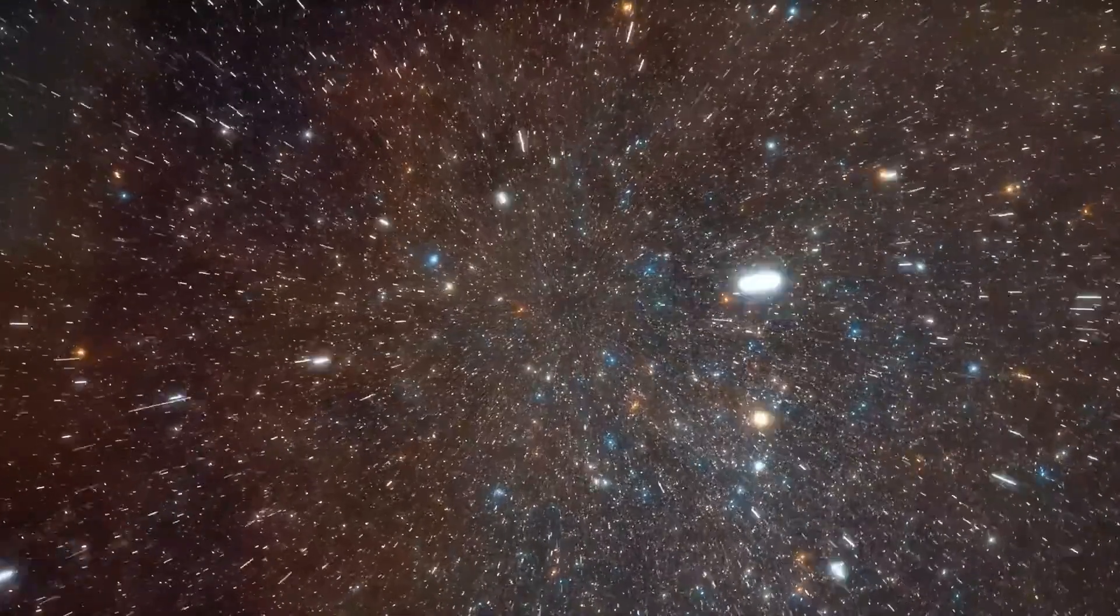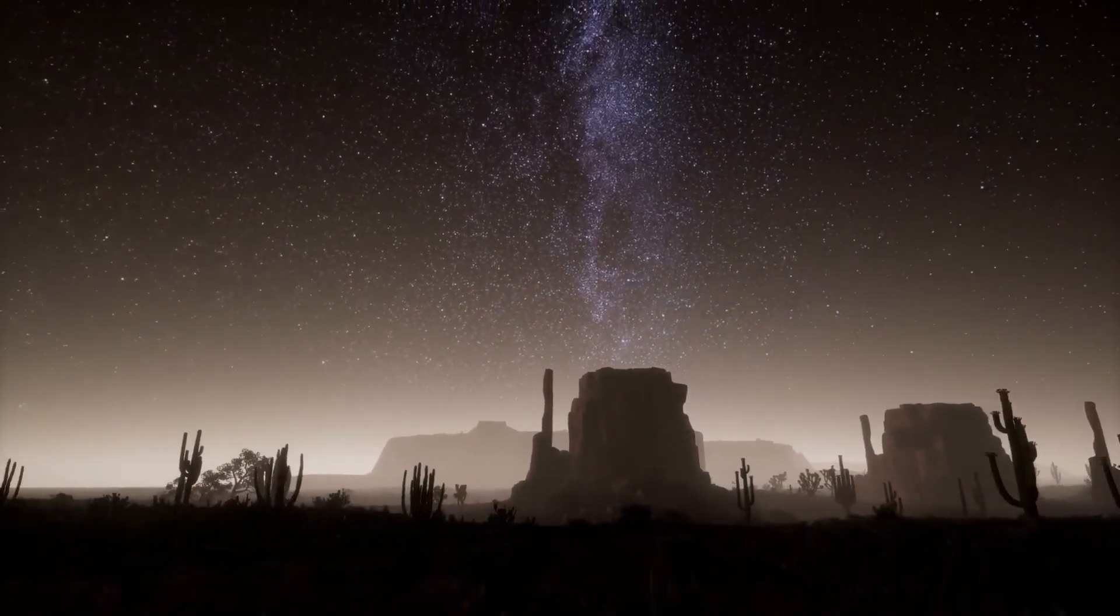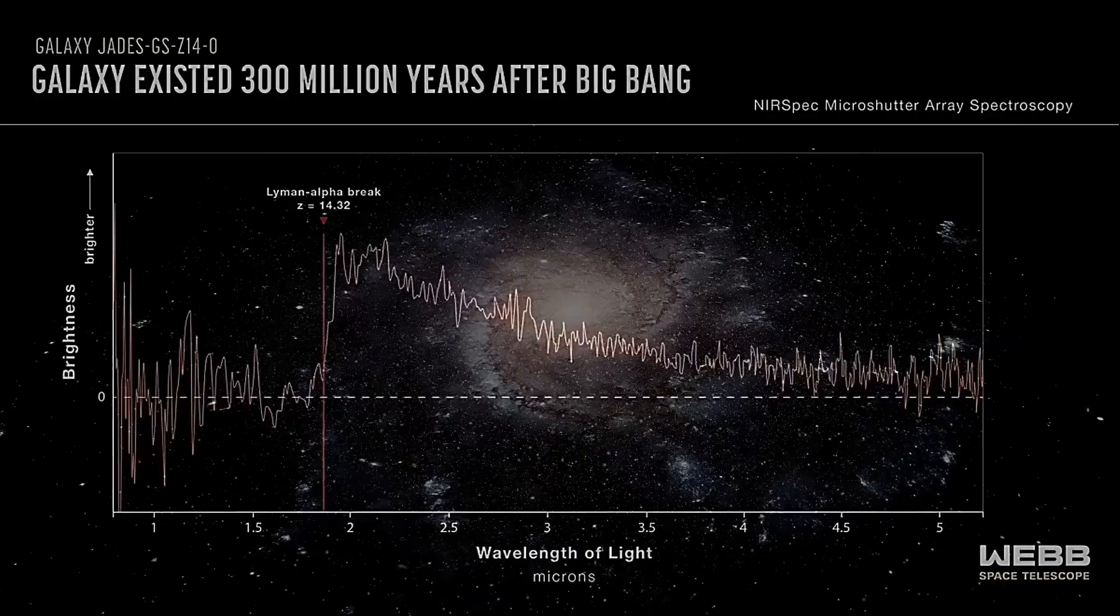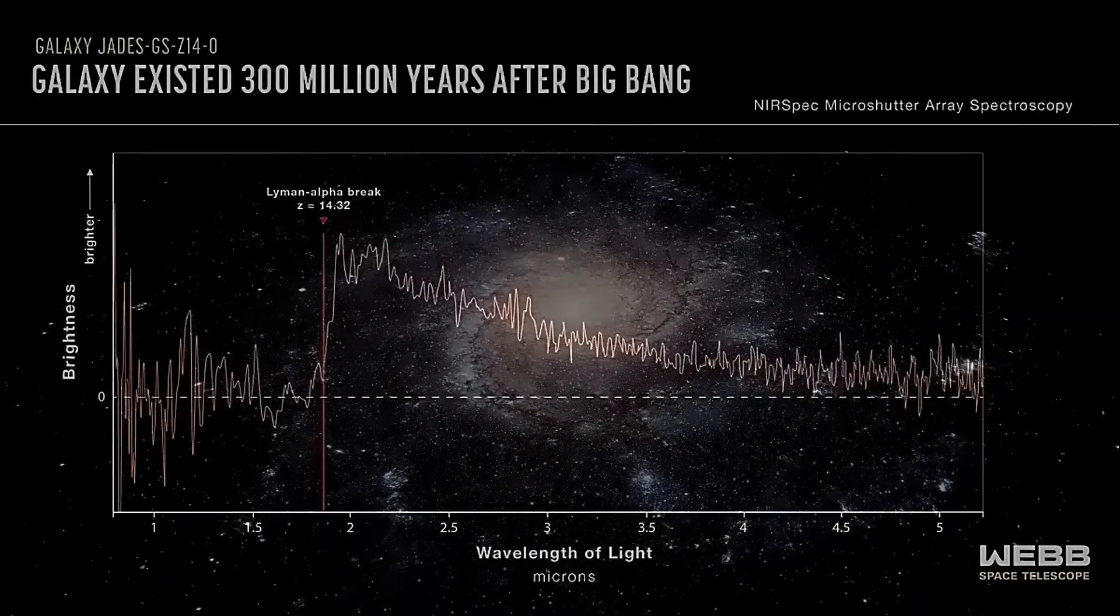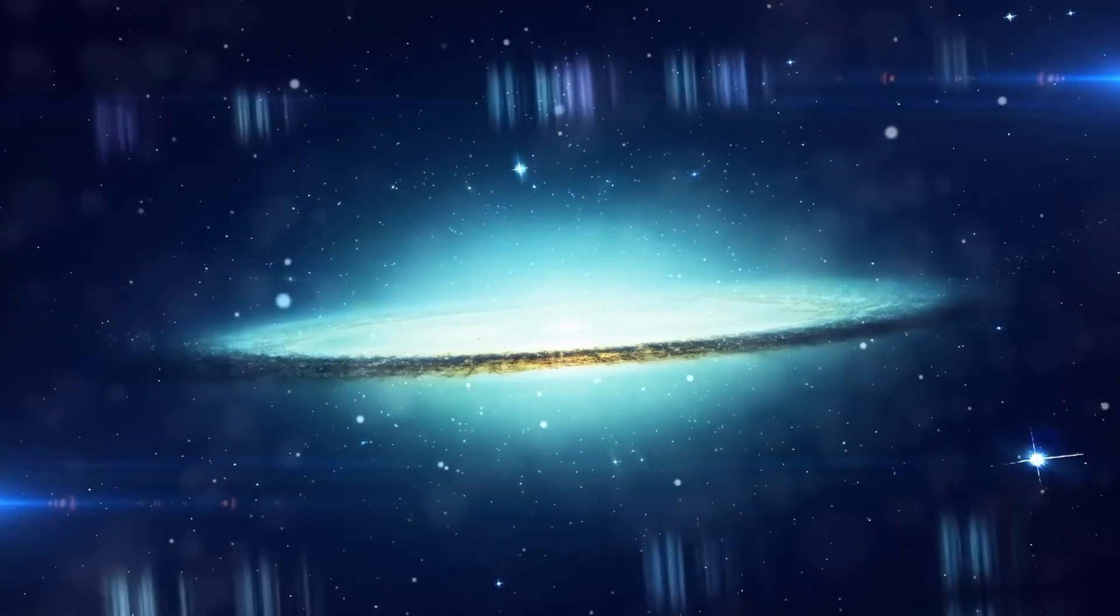Since NASA published Webb's first deep image, one headline has followed the next. First, the team of the young Harvard astronomer Rohan Naidu discovered the galaxy GLASS-C13 with a redshift of approximately 13. This galaxy existed around 300 million years after the Big Bang.